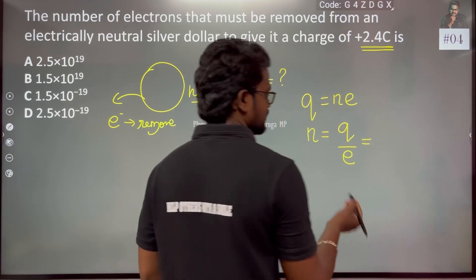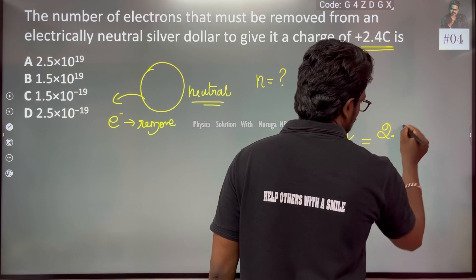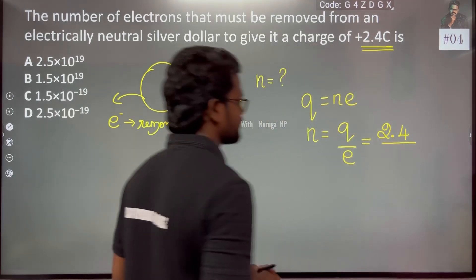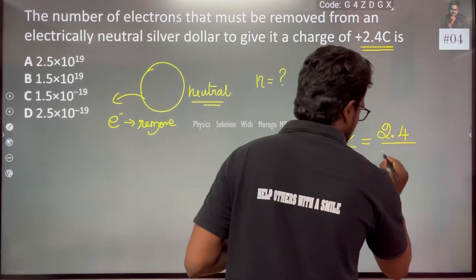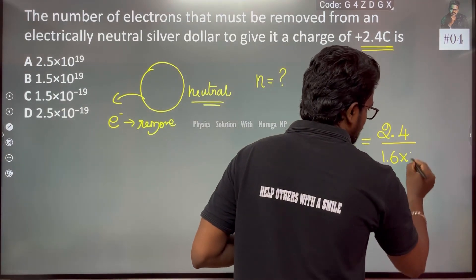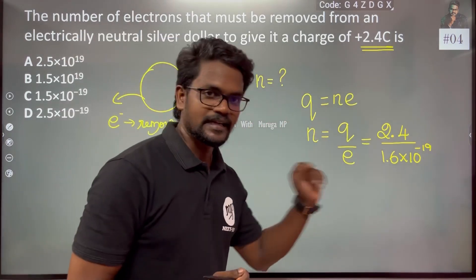q, the charge, is 2.4, that is plus 2.4 divided by electron charge. One electron charge is 1.6 times 10 to the power minus 19.